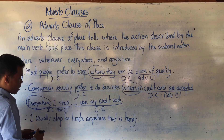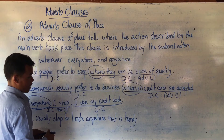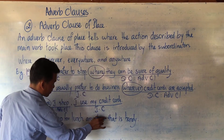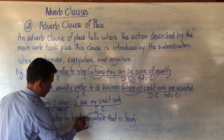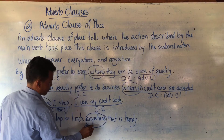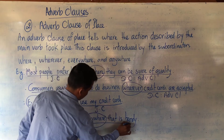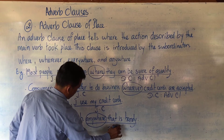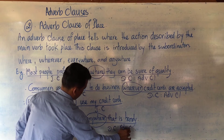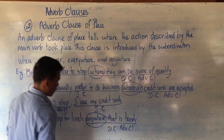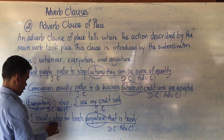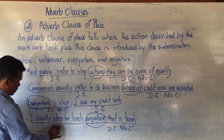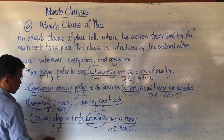Number four: 'I usually stop for lunch anywhere that is handy.' 'Anywhere' is the subordinator. From the subordinator to 'handy' is the Dependent Clause (DC) — this DC is an Adverb Clause of Place. And 'I usually stop for lunch' is the Independent Clause (IC).